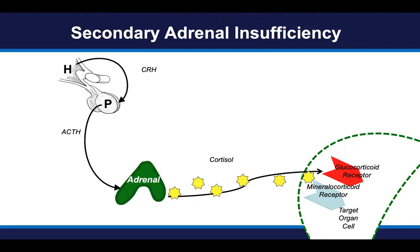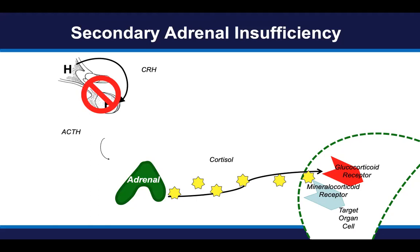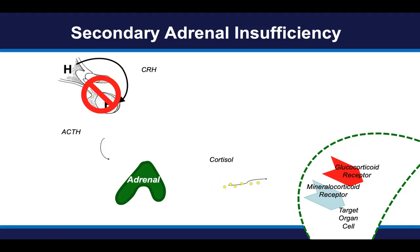Secondary adrenal insufficiency is a different form. In secondary adrenal insufficiency, there is a problem with the hypothalamus and/or the pituitary such that there is insufficient or deficient production of ACTH. Since you need ACTH to make cortisol, there is a resultant deficiency of cortisol, but not necessarily aldosterone. In secondary adrenal insufficiency, the adrenal cortices and adrenal glands are fine — nothing happened to them — but they're not being stimulated by ACTH and therefore not producing cortisol.